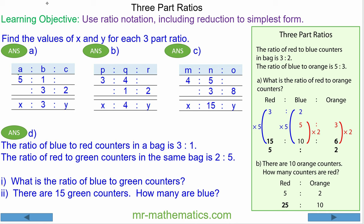For question a, we have a to b which is 5 to 1, and b to c which is 3 to 2. Now b is common to both, and we already have a ratio of 3 to 2 for b to c.